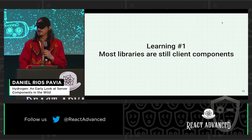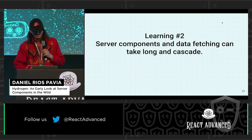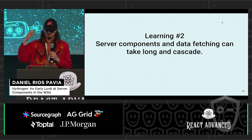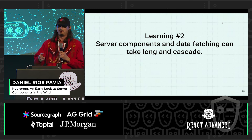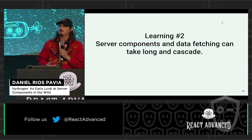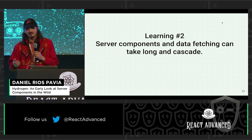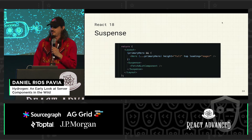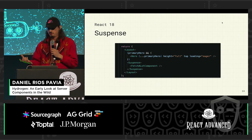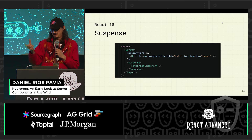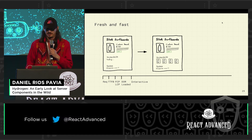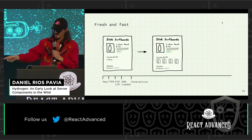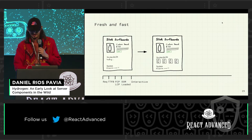Sometimes you have to work around things to make them compatible. A second learning is that as soon as we gave server components to people, they started doing a lot of data fetching. This could take long, and then people ask: are server components supposed to make my site faster, but it's actually slower? That's because we're data fetching a lot of stuff. Something that React is giving us is Suspense — you wrap a heavy component in Suspense, and the result is that everything renders except that one heavy part, which gets rendered and served later.